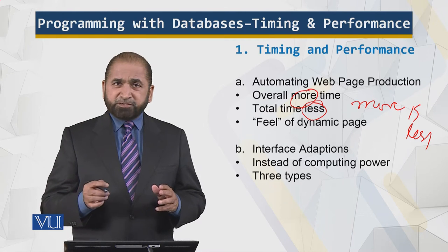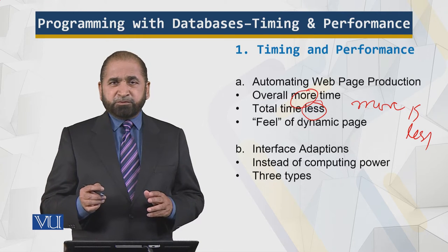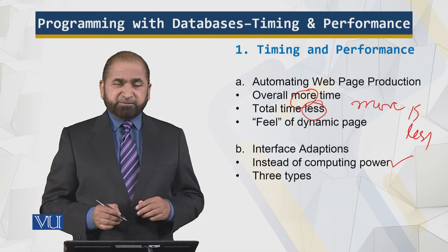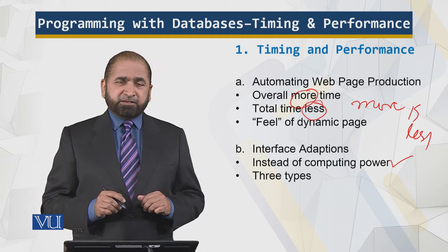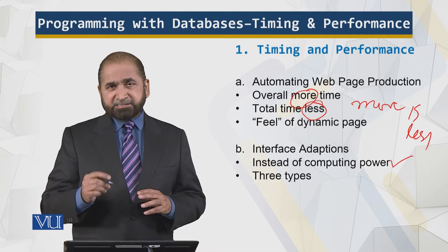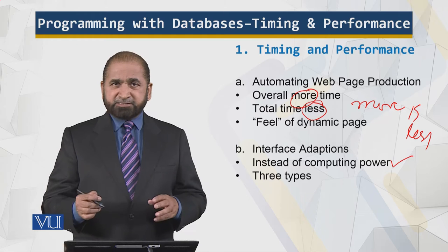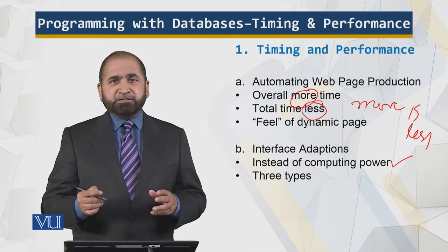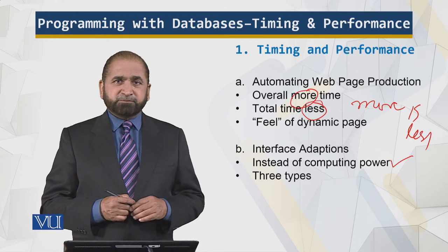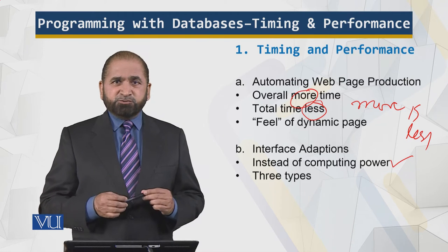We are automating the process of page generation, so we need computing power. But we have to play smart instead of just adding computing power — we use adaptations. There are three different types of adaptations. They will access the database without the user knowing, to generate a dynamic web page without requiring a higher-power web server or database server. The client has to be thin, with limited processing done at the client end.